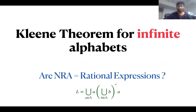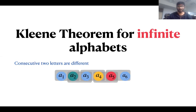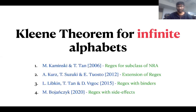For example, the language whose first and last letters are the same can be described with the following rational expression. Now consider the language where consecutive two letters are different — A1 ≠ A2, A2 ≠ A3, and so on. It is shown that this language is not rational, but it is recognized by a one-register automaton. There has been some work on regular expressions for register automata, most of which are extensions of regular expressions or expressions for subclasses of register automata.